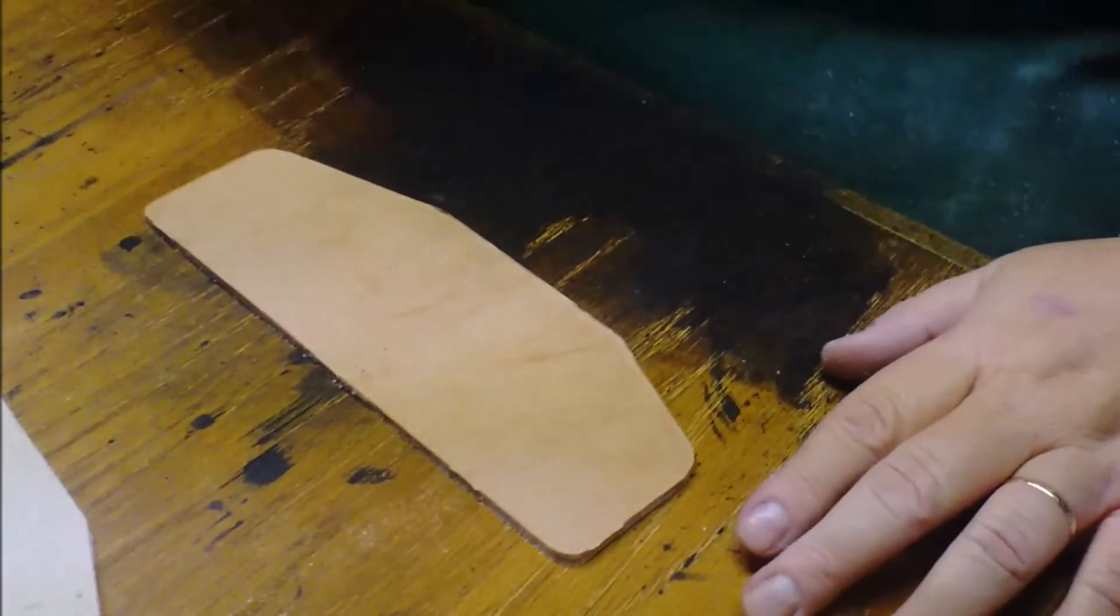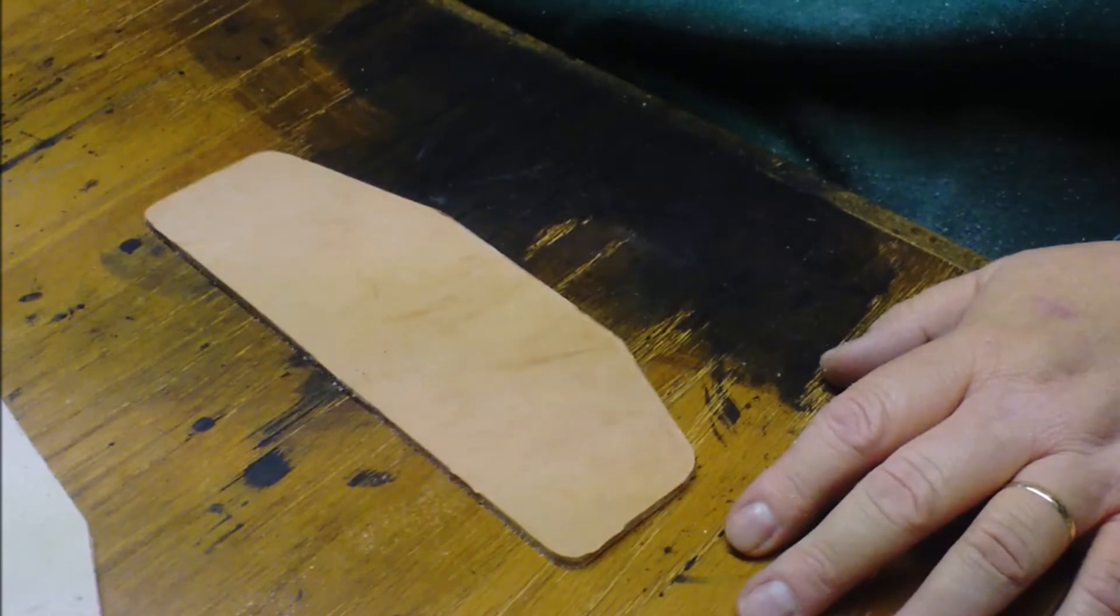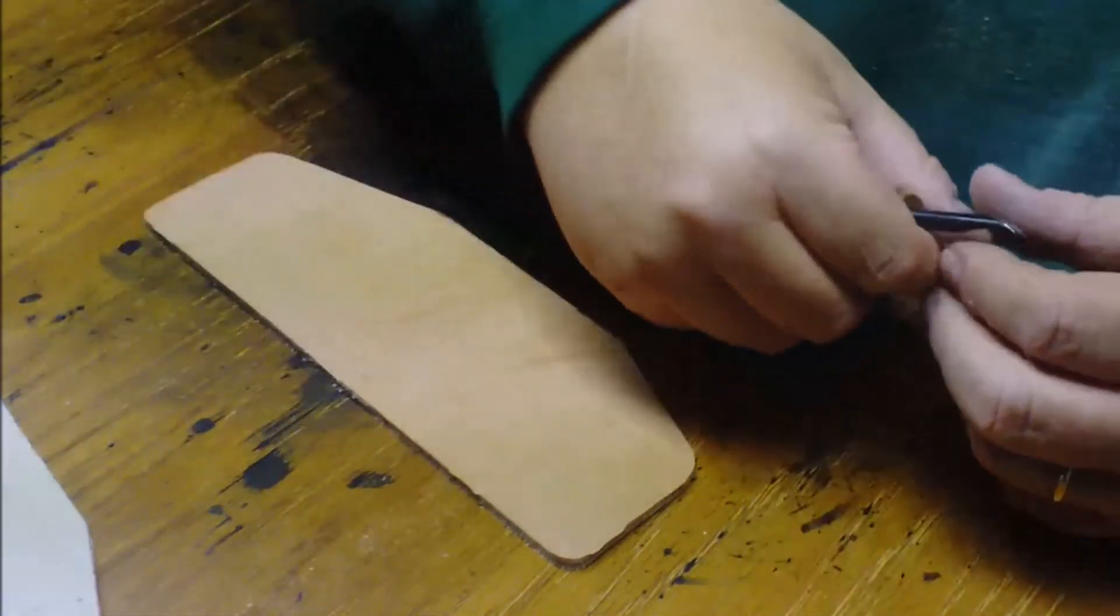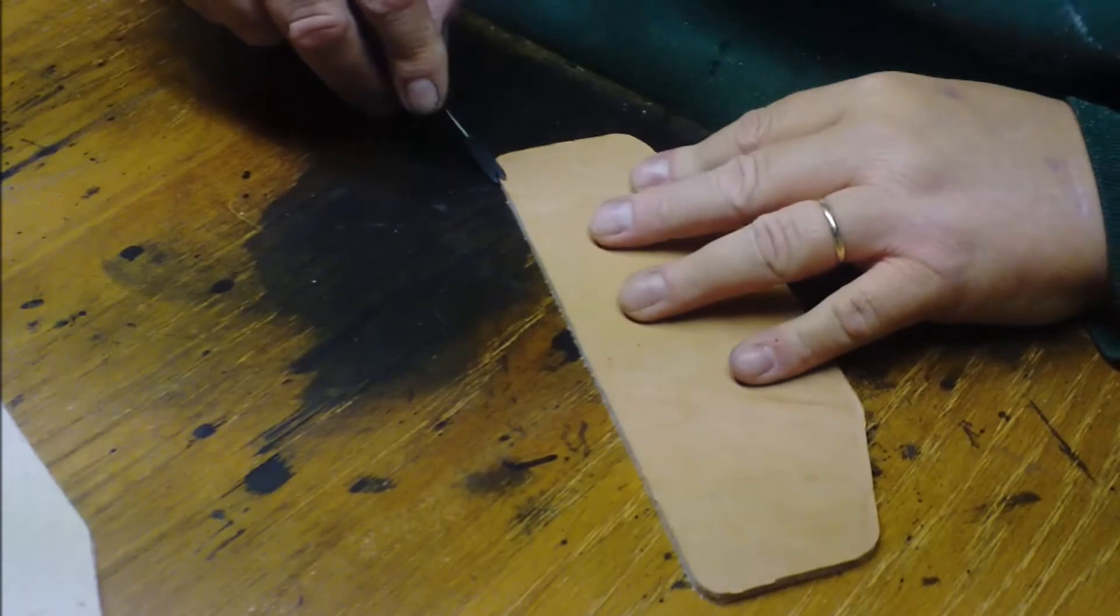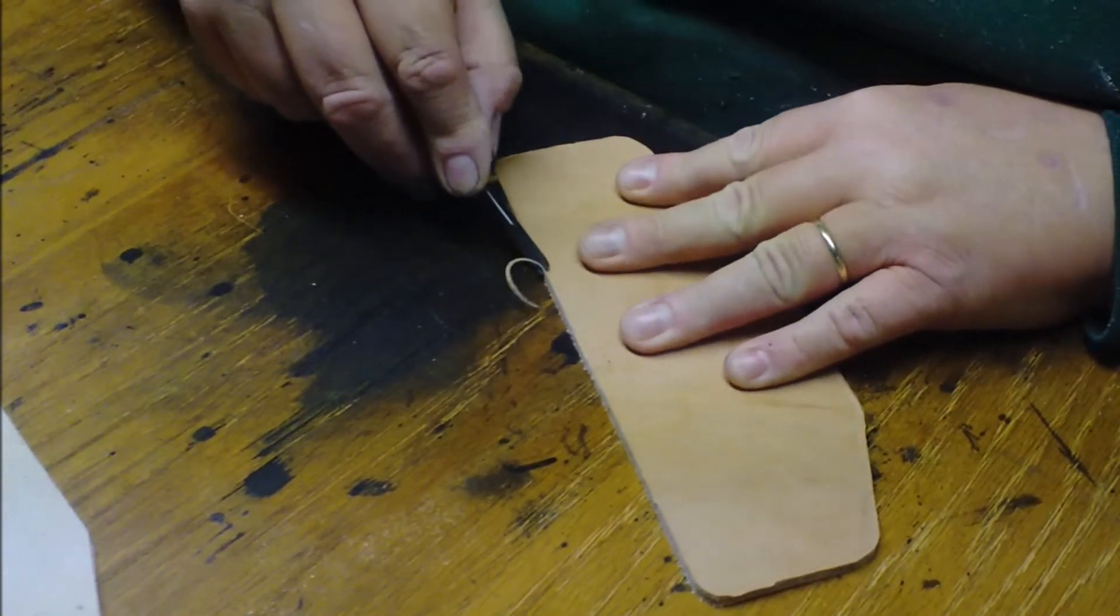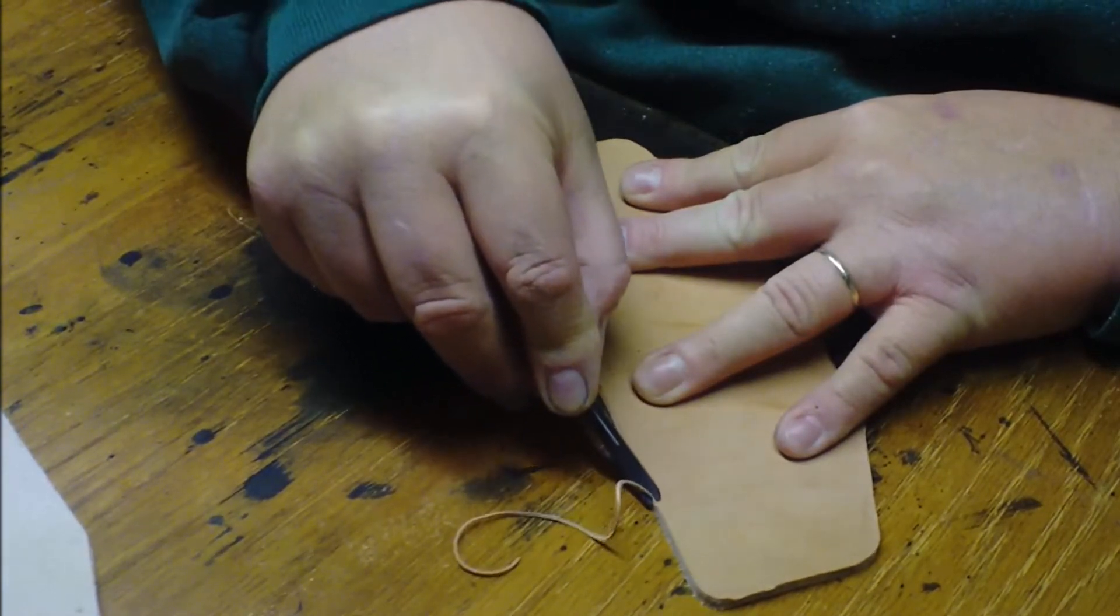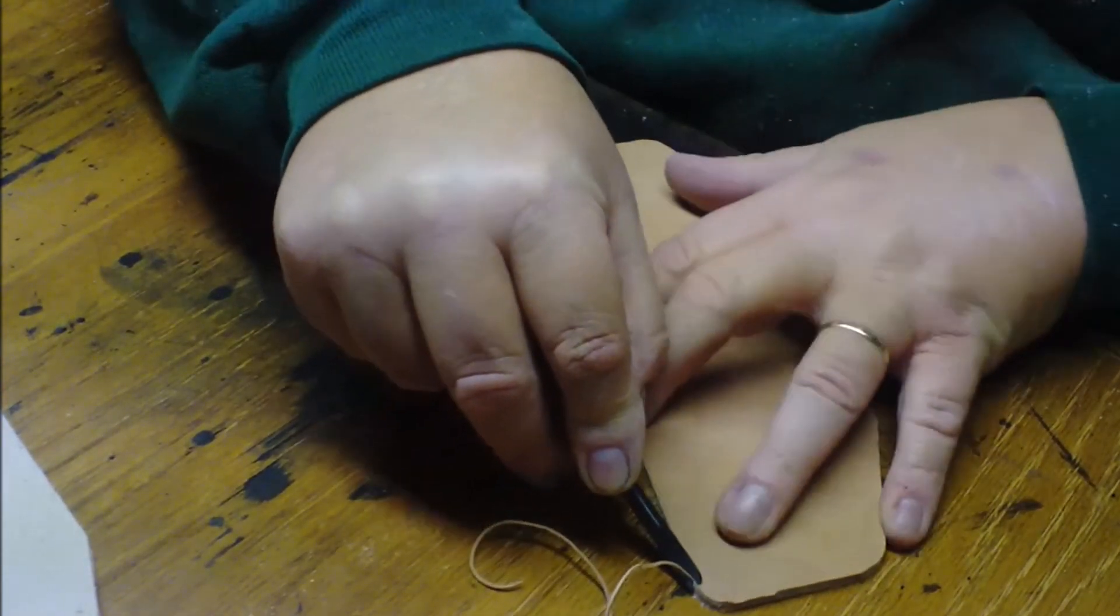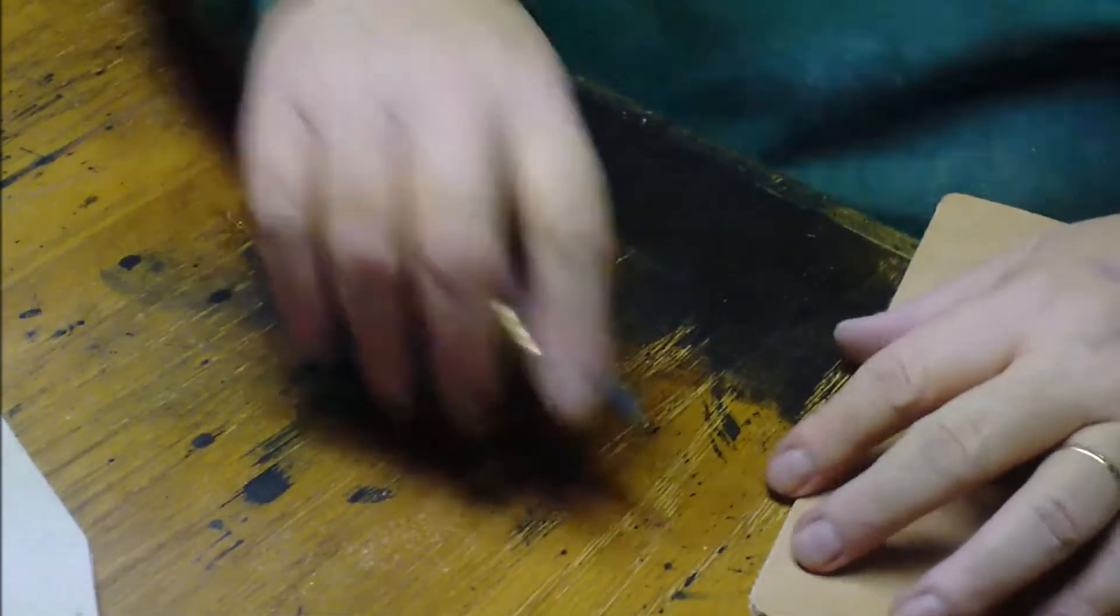And grab the edge beveler, which I just sharpened or strapped I should say. And it doesn't really matter where you start. All the edge beveler is doing is taking just that corner off. And we're only doing the outsides of the holster at this point.